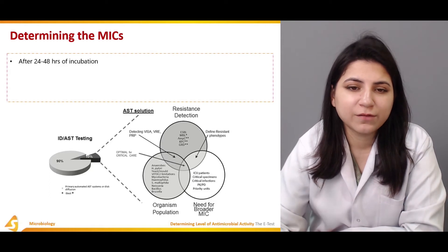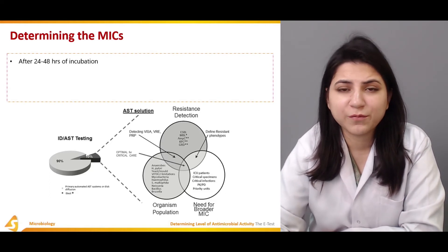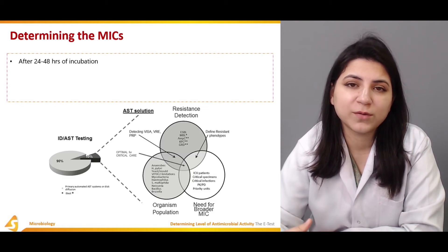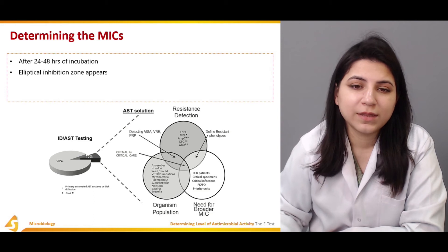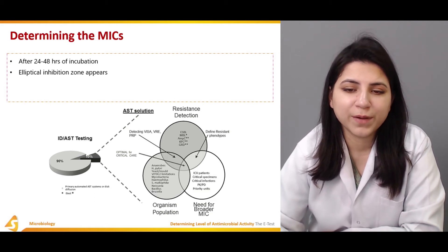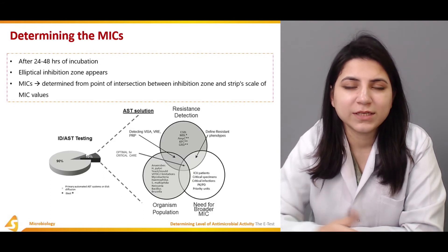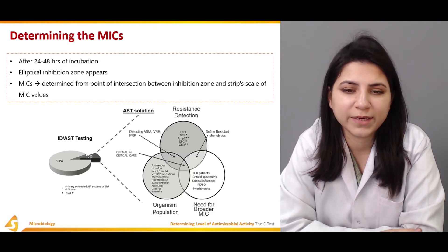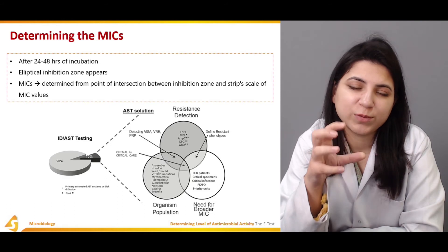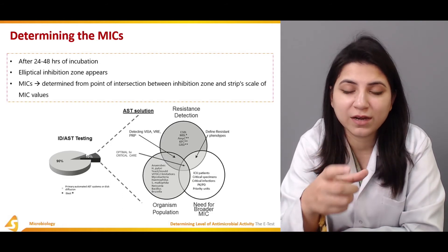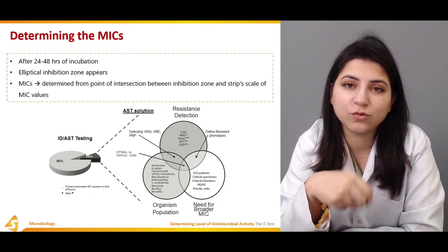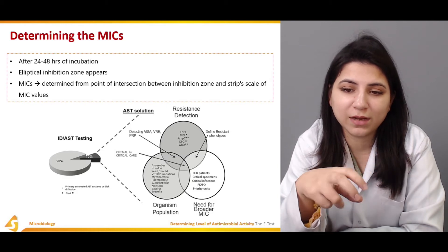After 24 to 48 hours of incubation — depending on the type of pathogen being tested — an elliptical inhibition zone appears. The MIC is determined from the point of intersection between the inhibition zone and the strip's MIC scale. This helps us identify the concentration of antibiotic that is ideal for stopping the growth of microbes at that particular point.